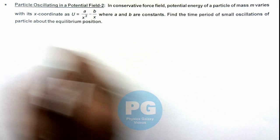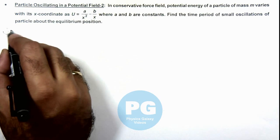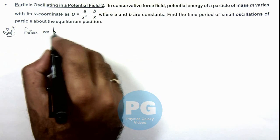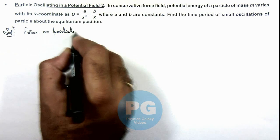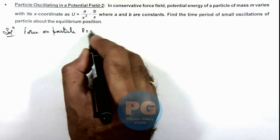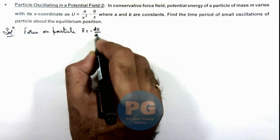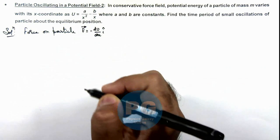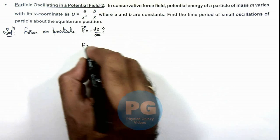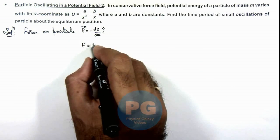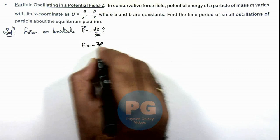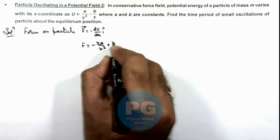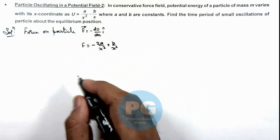Using the expression of potential energy, we can calculate the force on the particle. We calculate F as minus dU/dx — vectorially we can write i-cap also. So we calculate the numerical value of force. This will be minus 2a/x³ plus b/x². For this analysis I am ignoring the symbolic notation of vectors.